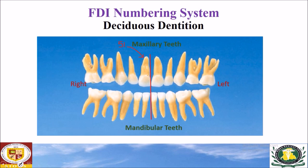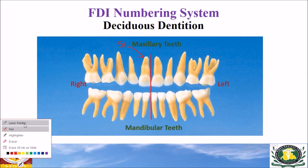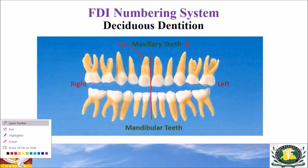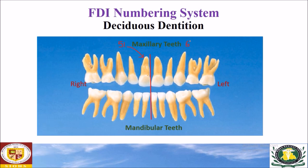The maxillary left canine — this is the central incisor, this is the lateral incisor, and this is the canine. The maxillary left quadrant is represented by the number six. This tooth is the third tooth from the midline — one, two, three — so we write three. This tooth is six three. We pronounce it six three, not sixty-three.